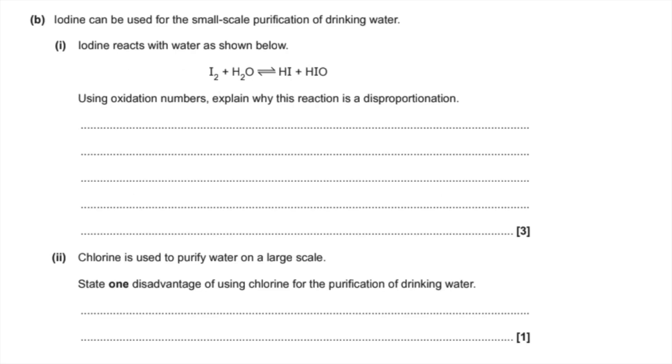Part B now. So iodine reacts with water as shown below. Here's an oxidation number to explain why this is disproportionation. So obviously the first thing I'm going to do is show the oxidation numbers there of the iodine. So it's zero in its elemental form, minus one in HI, and plus one in HIO.